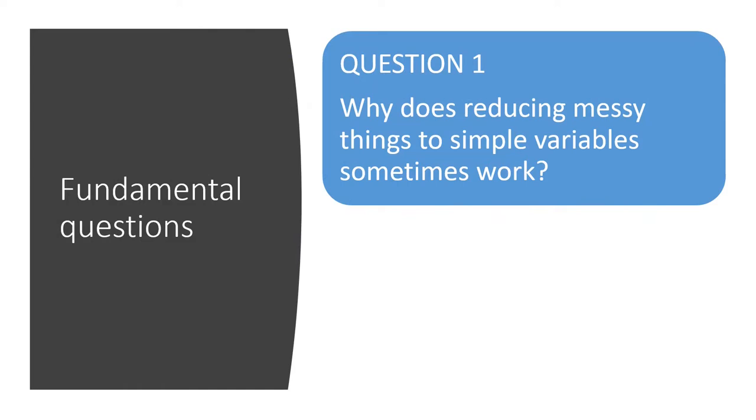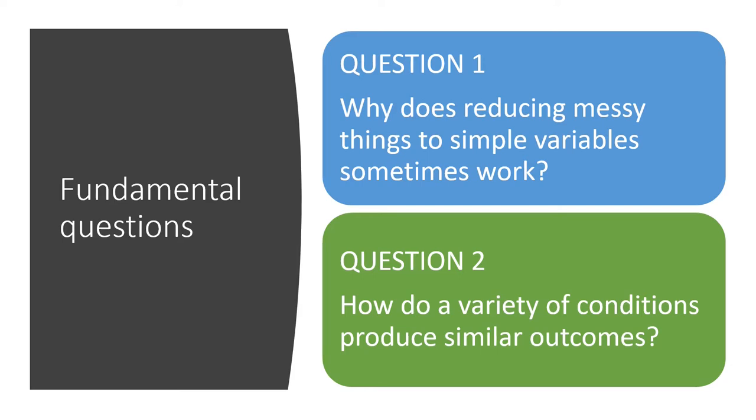So there are two questions here. On the one hand, we have to ask, why does reducing messy things to simple variables sometimes work? Why does our machine learning work? What is it about this reduction process that actually sometimes delivers meaningful results to us? And the second question is, how does this work generally? How do a variety of different conditions of different variables produce similar outcomes?